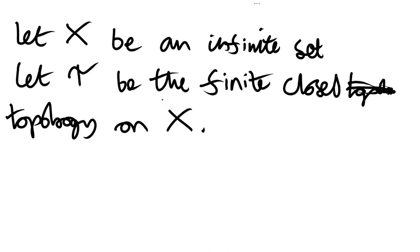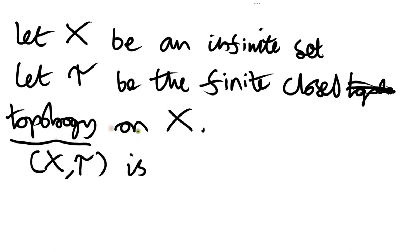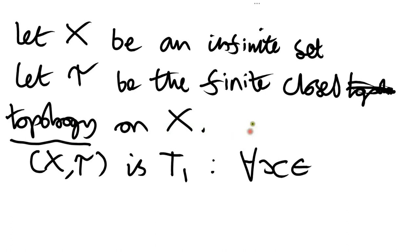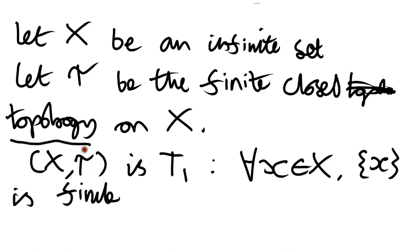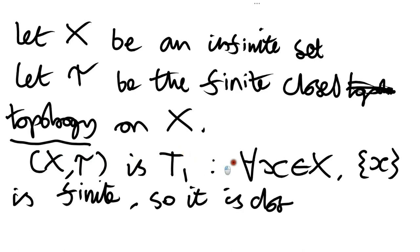In this case, I claim that X-tau is T1. The proof is very straightforward: suppose we have an element of X. Well, the set just containing that element is going to be finite. Since it's finite, it's closed. So every singleton subset is closed — that's all we need — and so the space is indeed T1.